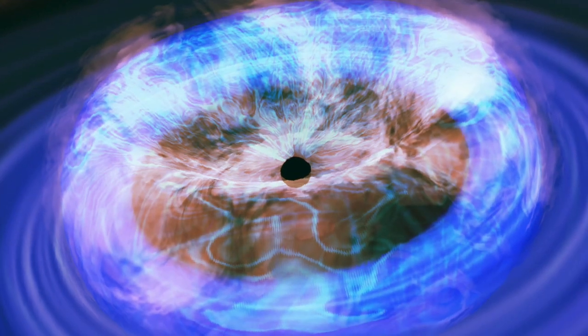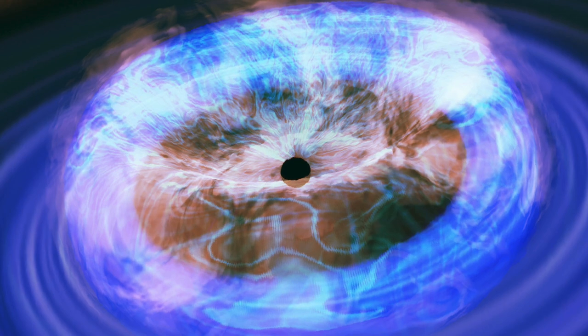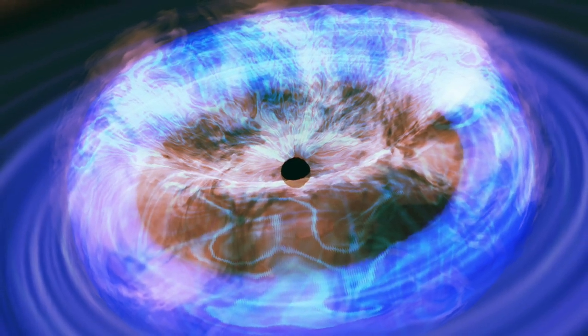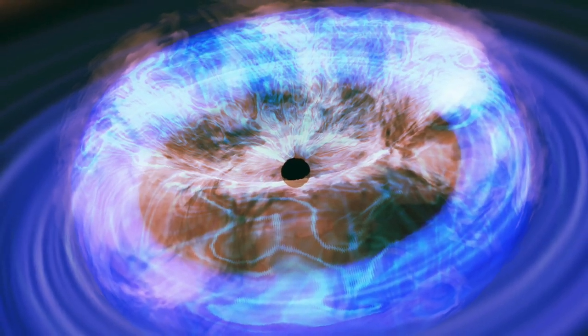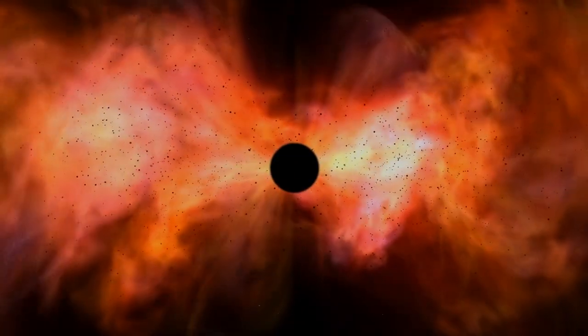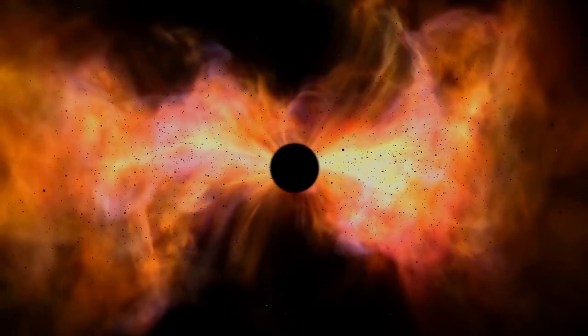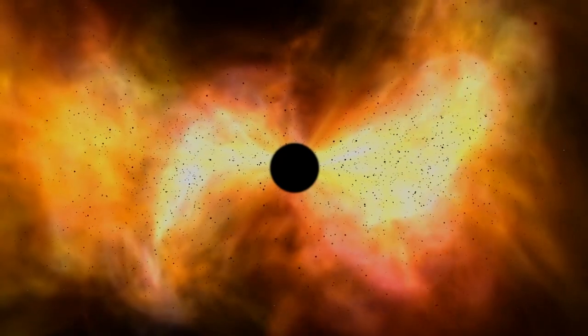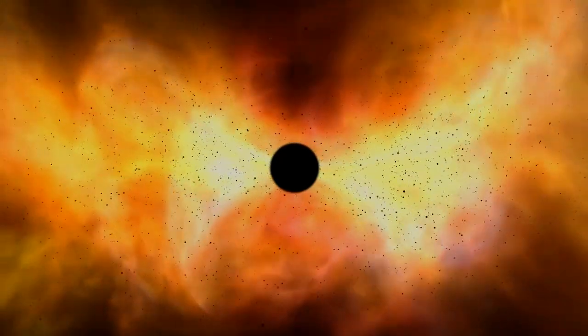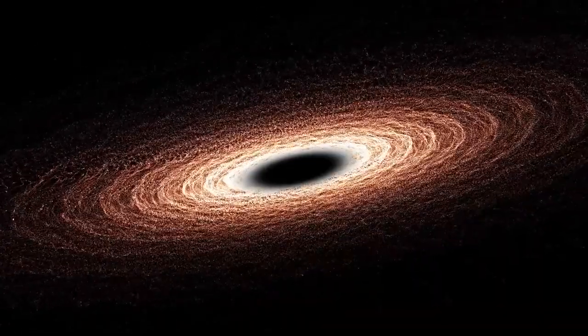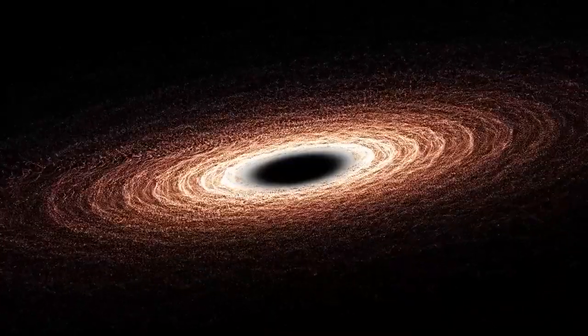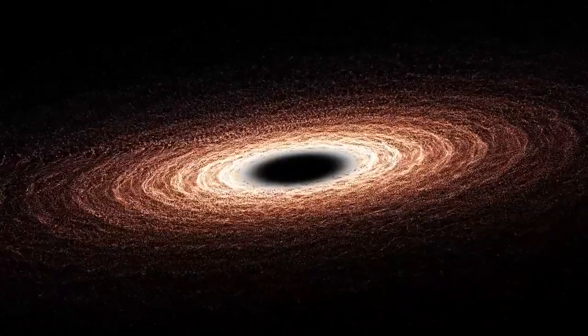The corona that surrounds the black hole would start to shrink as the accretion disk compacts itself around the gravitational giant. When things begin to settle down, scientists believe that the magnetic field will weaken enough to lose its ability to hold on to the corona, which would cause all X-ray emissions to halt for a time before slowly beginning again.